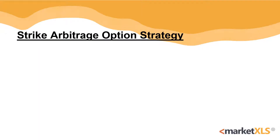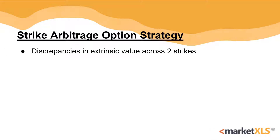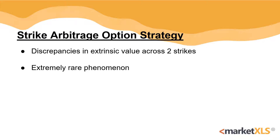A Strike Arbitrage is an options arbitrage strategy which takes advantage of the discrepancies in extrinsic value across two different strike prices on the same stock in order to make a risk-free profit. Such opportunities are extremely rare. They get filled out and corrected quickly and may not result in enough profits to justify the commissions paid.